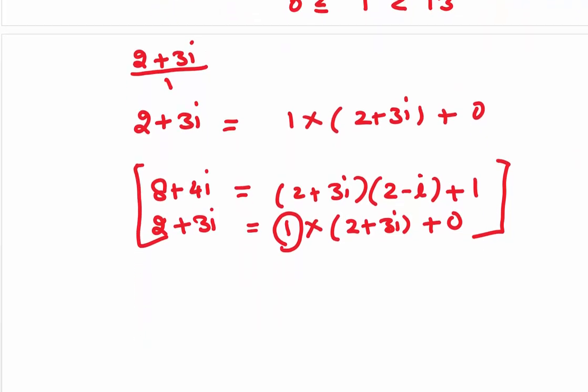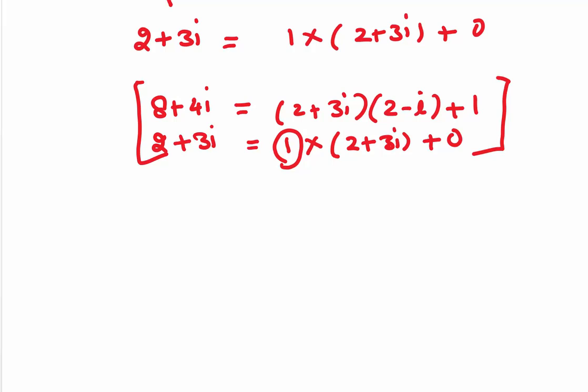So, 1 is the GCD from these two steps. If 1 is the GCD, then all its associates are also GCD. So, the GCD is 1, minus 1, i and minus i. You can check, they would be dividing 8 plus 4i and 2 plus 3i. They would be dividing 2 plus 3i and 1. This is the whole process.